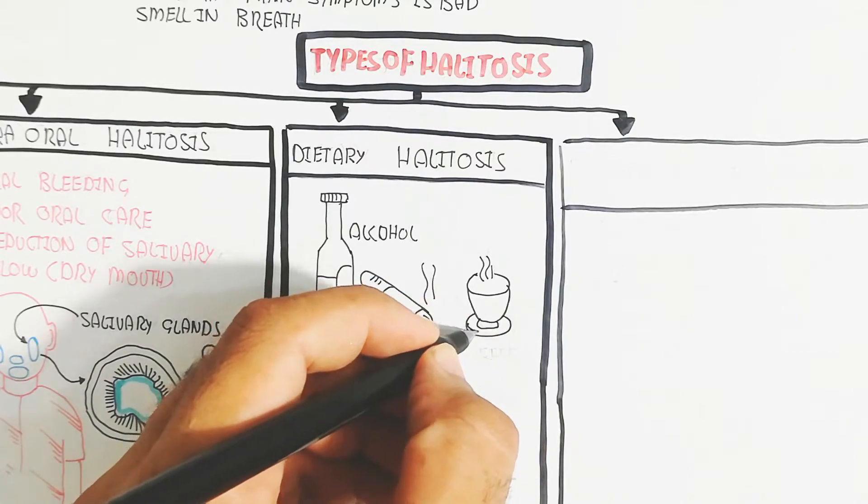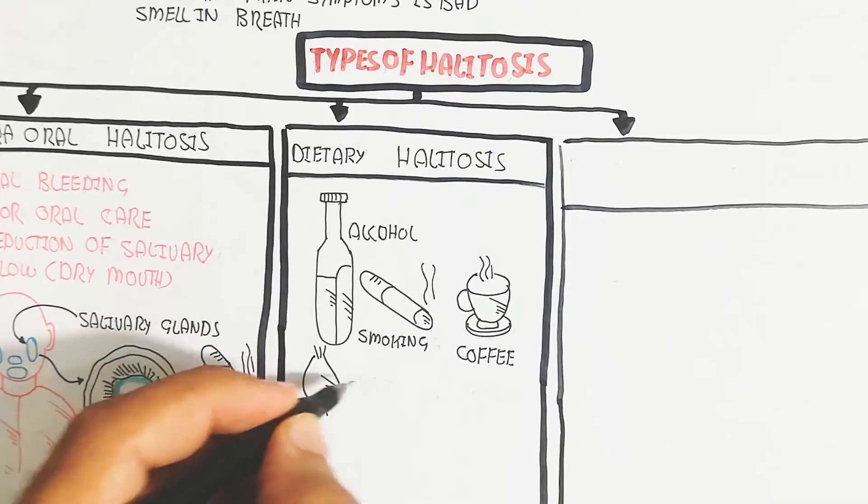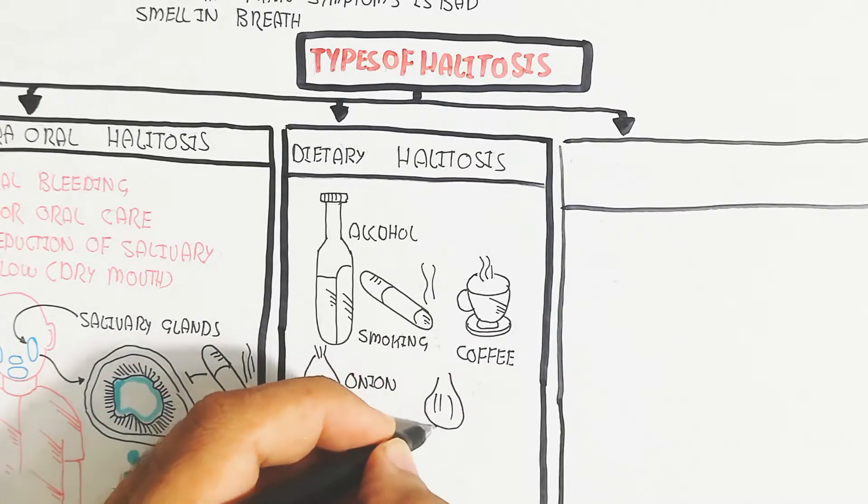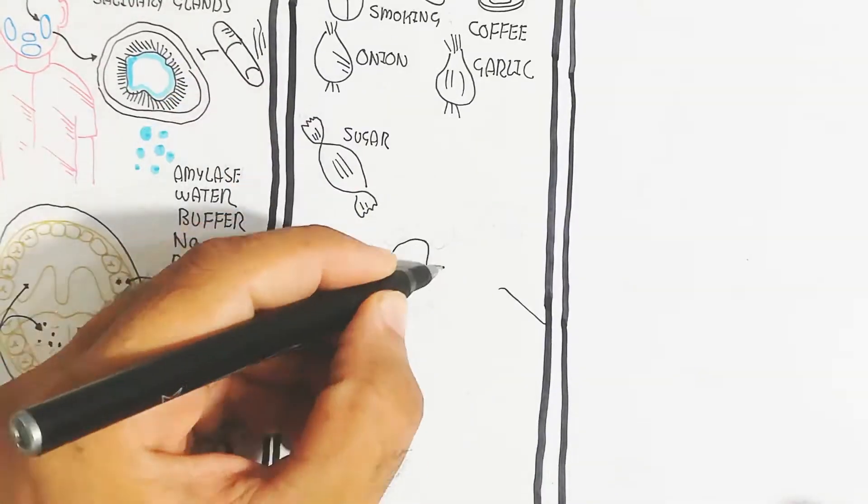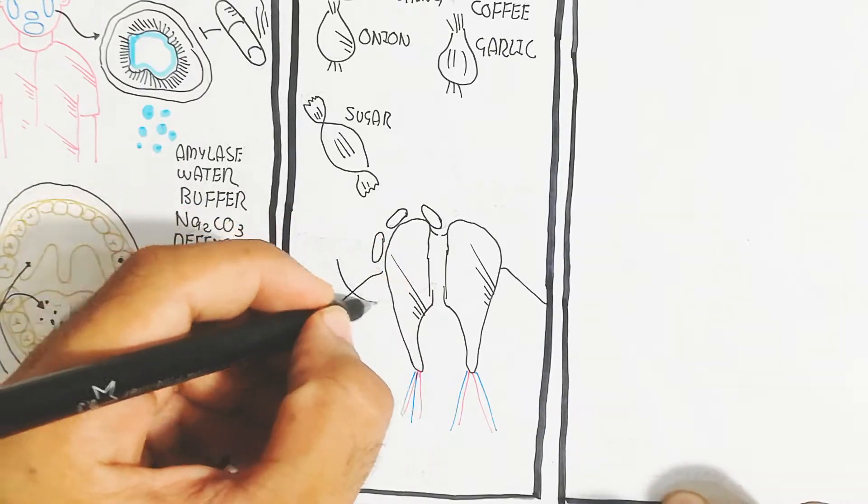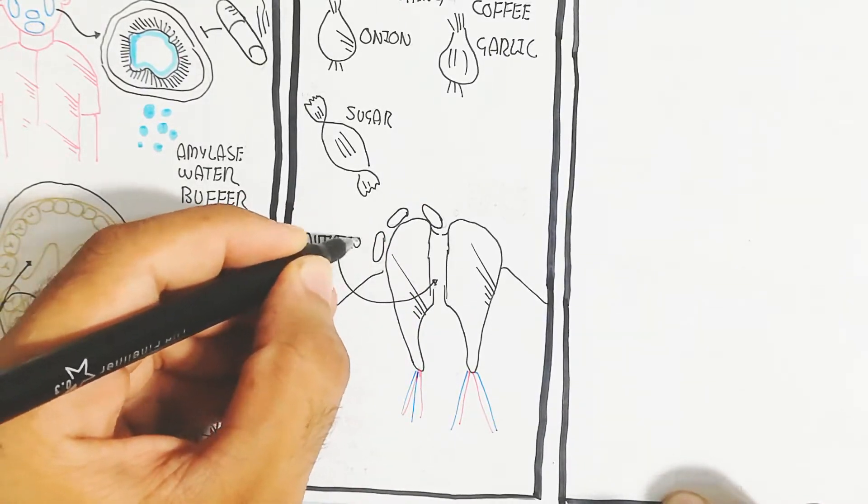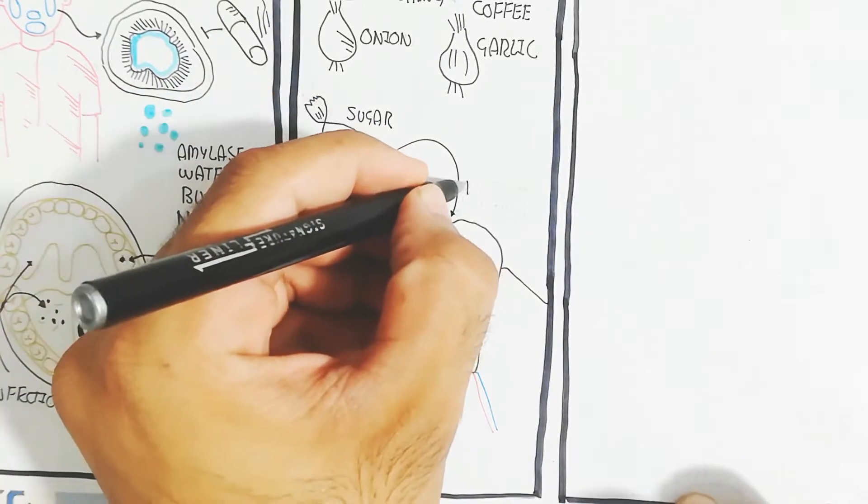Here is dietary halitosis, which is caused by alcohol, smoking, coffee, onion, garlic, and sugar. Sugar is indirect, but other foods are direct causes. For example, coffee, onion, garlic, smoking, and alcohol are direct causes.